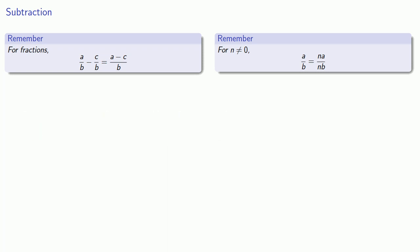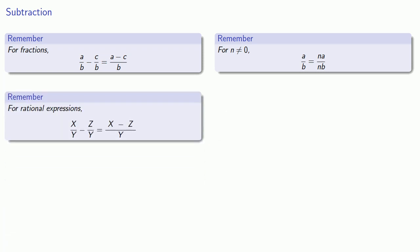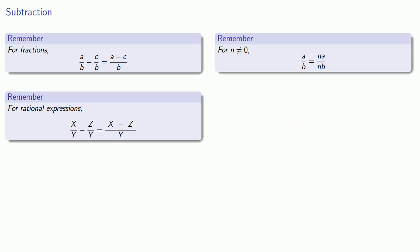Meanwhile, the rules for subtracting rational expressions are radically different. If we want to subtract two rational expressions with the same denominator, we'll subtract the numerators. Well, that's not too bad, actually. There is one important difference: because the numerator of the rational expression could be a polynomial, we want to make sure we're subtracting the entire polynomial. So it's best to think about the subtracted term as being inside a set of parentheses.